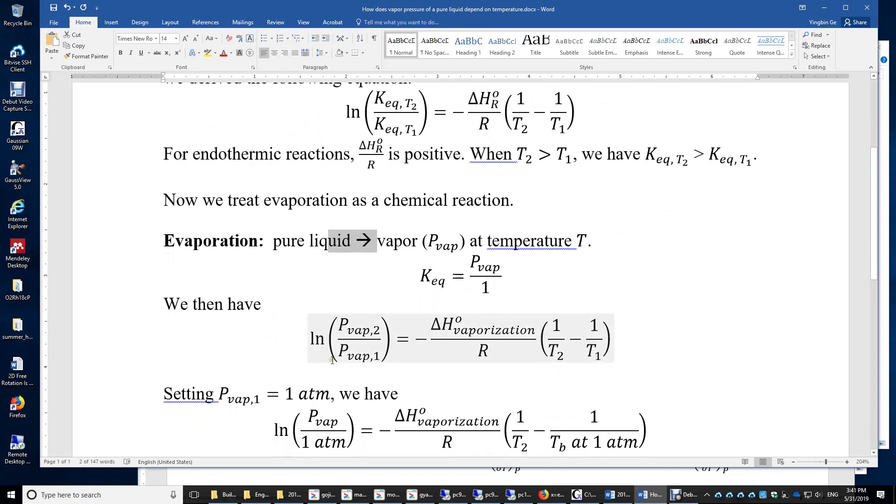We then have the original equilibrium constant equation converted to the vapor pressure equation. The vapor pressure does depend on temperature, and because the enthalpy of vaporization is always positive, at higher temperature you always have higher vapor pressure.